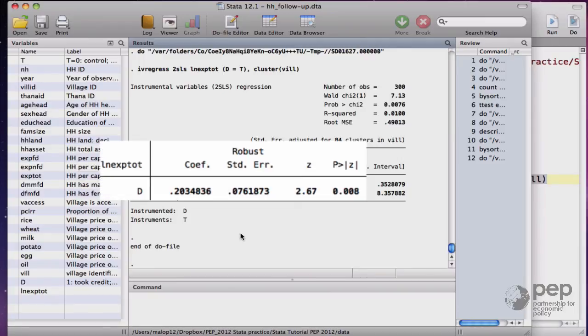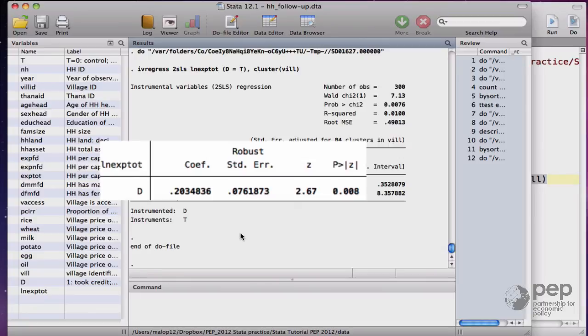The estimated effect of the treatment on the treated is 20%, which is larger than the intention to treat estimate, which was 16.8%. The ITT is smaller because the effect of the microcredit is sort of diluted. The output shows that the credit d is instrumented by the random assignment variable t.